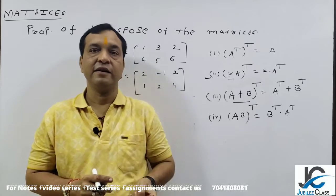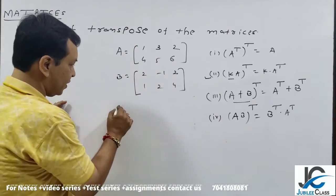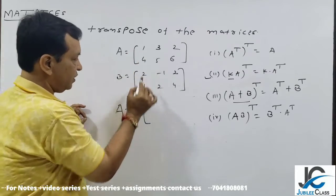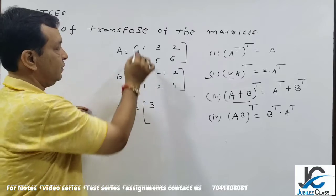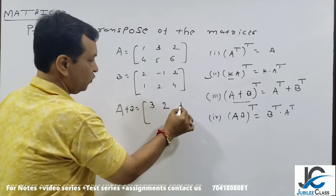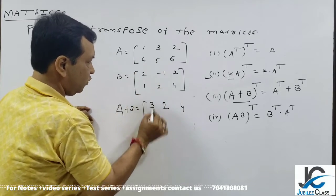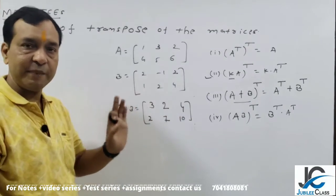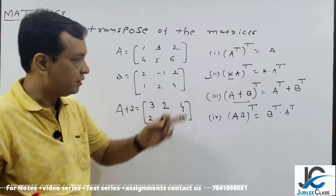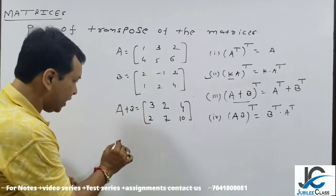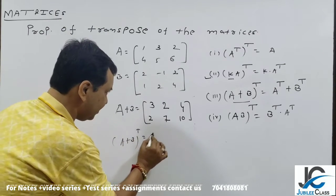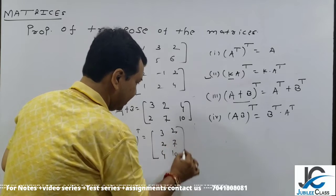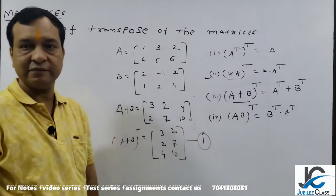This will be very simple. A plus B. Simple addition: 1+2=3, 3-1=2, 2+2=4, 1+1=2, 5+2=7, 6+4=10. Am I right? It is A plus B. What we want? Transpose of A plus B. So (A+B)^T is [3, 2, 4; 2, 7, 10]. One result is completed. Is that clear?